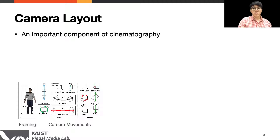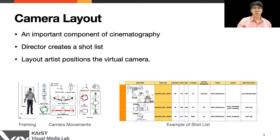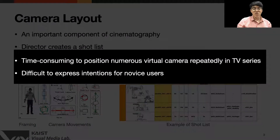Camera layout — consisting of framing and camera movement — is an important element of cinematography to deliver the emotion and suspense of a scene. Generally, in a 3D animation pipeline, the director creates a shot list to deliver the cinematic intention, and the layout artist uses the shot list to position the virtual camera. While this process can be easy for professional artists, it can be problematic in the case of TV series where artists have to work on many shots. Also, for novice users or directors, it is difficult to position a virtual camera and express the intention due to its high degree of freedom.